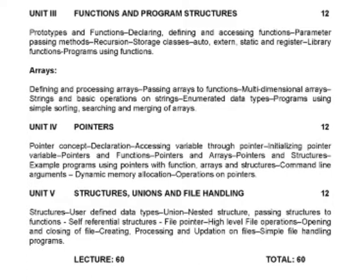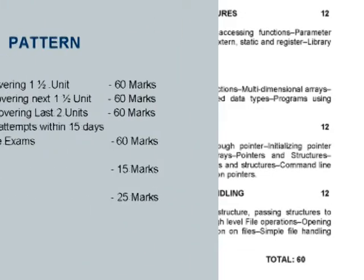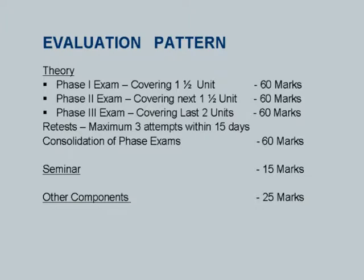All first-year students of all UG programs study this paper. We divide the five units into three phases. In Phase 1, we cover the first unit and half of the second unit. In Phase 2, we cover the remaining half of the second unit and the third unit. In Phase 3, we cover the fourth and fifth units.